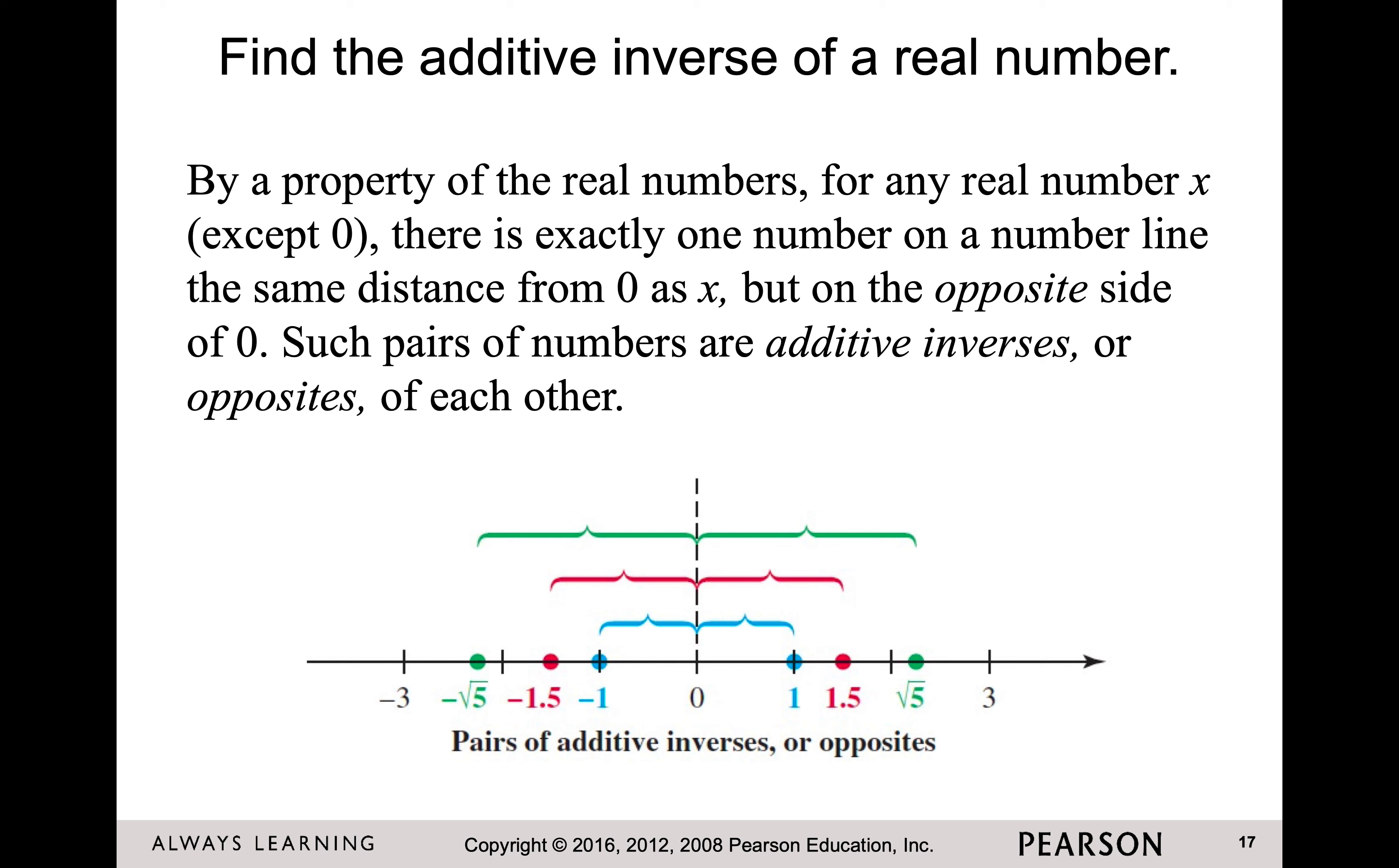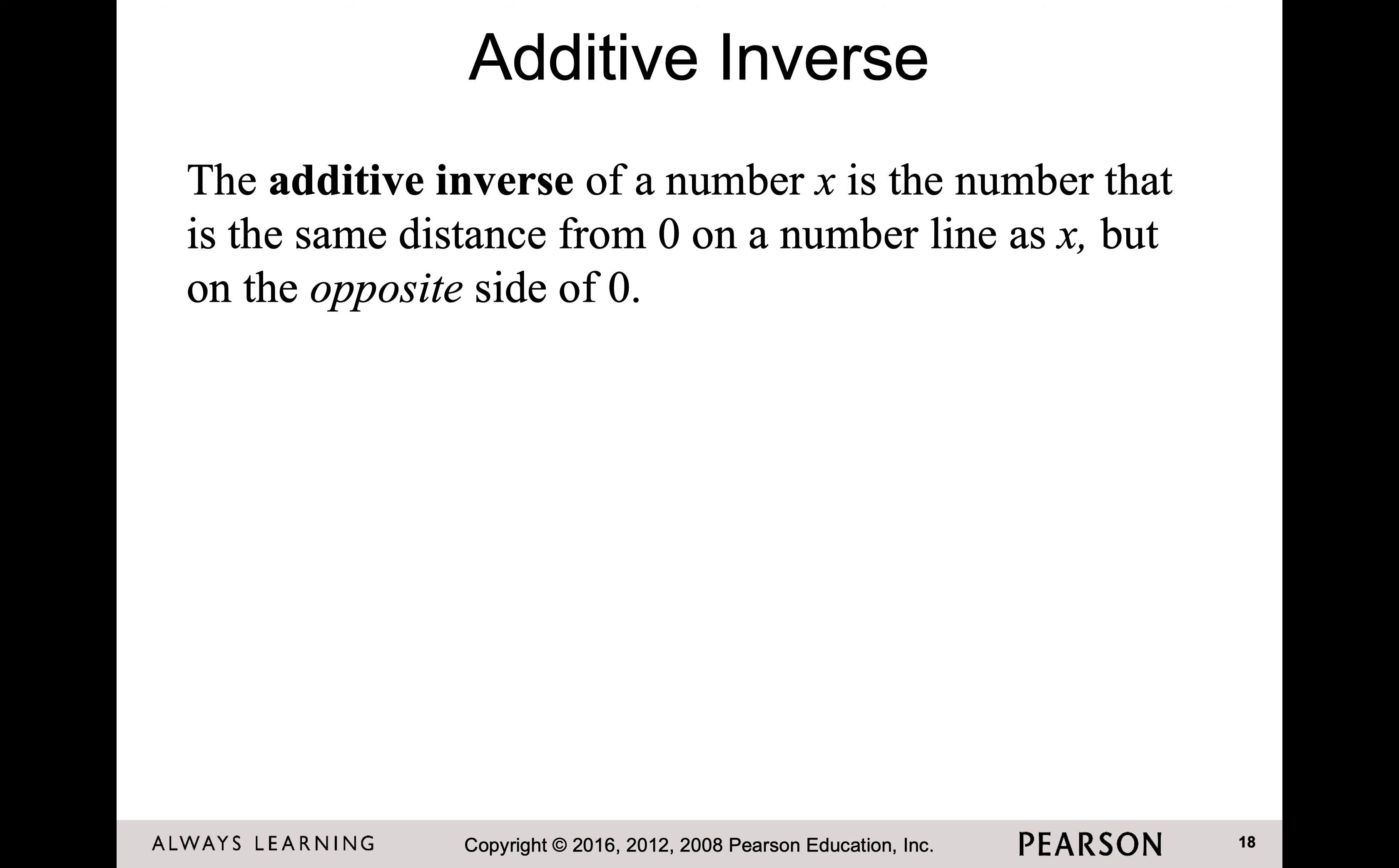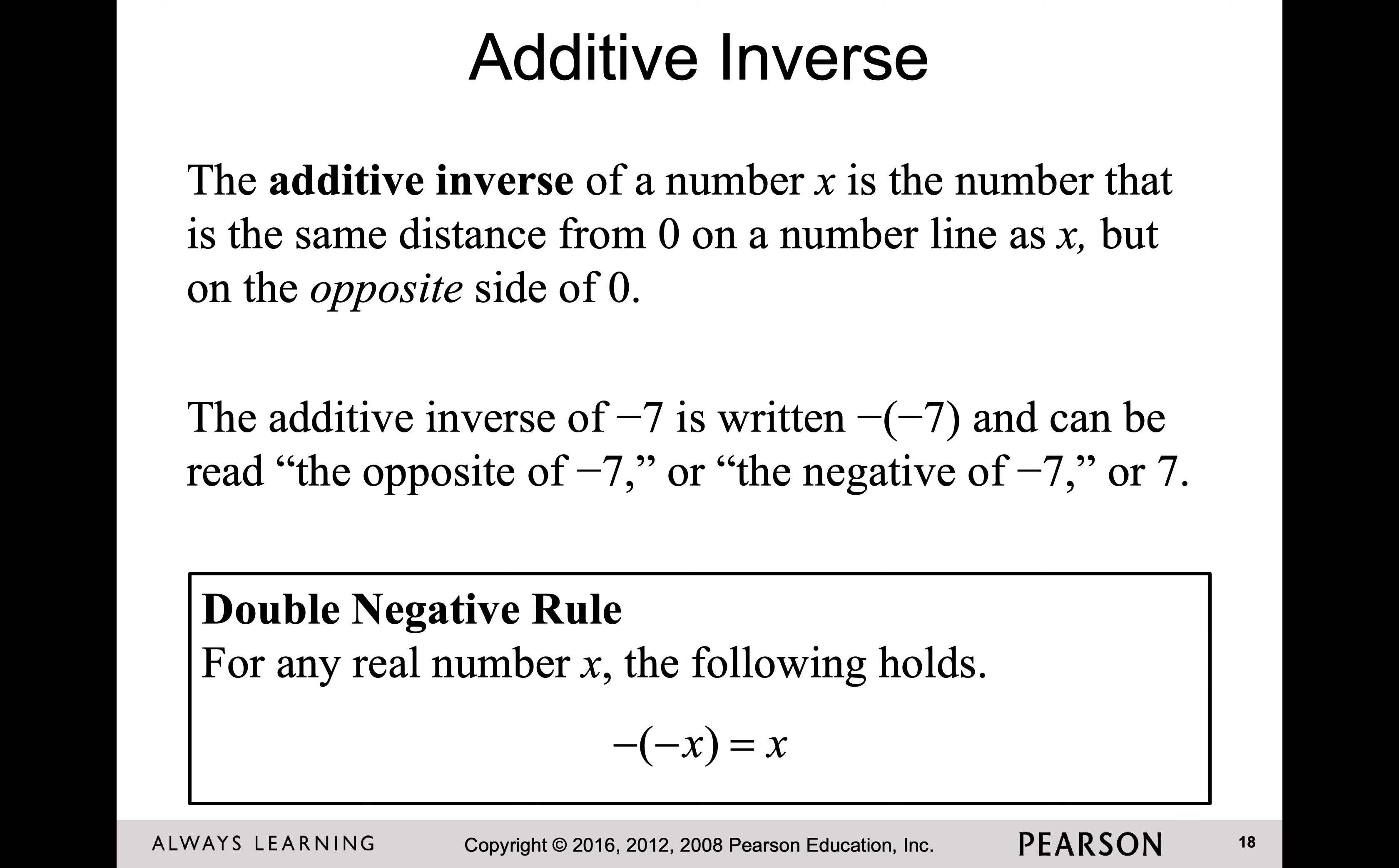Find the additive inverse. What is the additive inverse? Those are my opposites. If I'm doing negative 1.5, the additive inverse is positive 1.5. Negative square root of five, positive square root of five. Those are my opposite numbers. We can give this a fancy definition of the additive inverse is the same distance from zero on the number line.